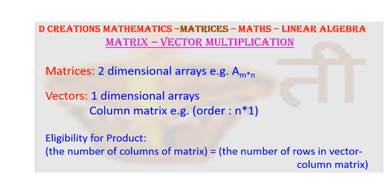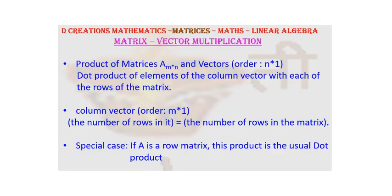Now if you want to take a product, there has to be an eligibility condition that needs to be satisfied. And of course that comes from the fact that this is based on dot product. What is that condition? The number of columns of matrix, which in this case is n, has to be equal to the number of rows of this vector, which again here is n. So here the condition is satisfied. So if the condition is satisfied, we can go for the product.